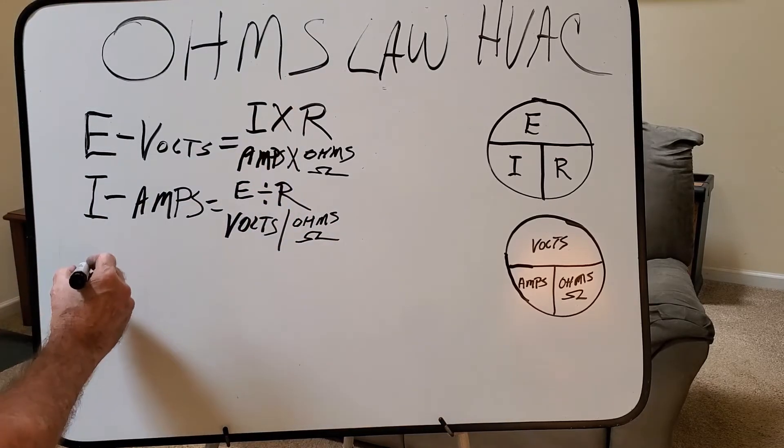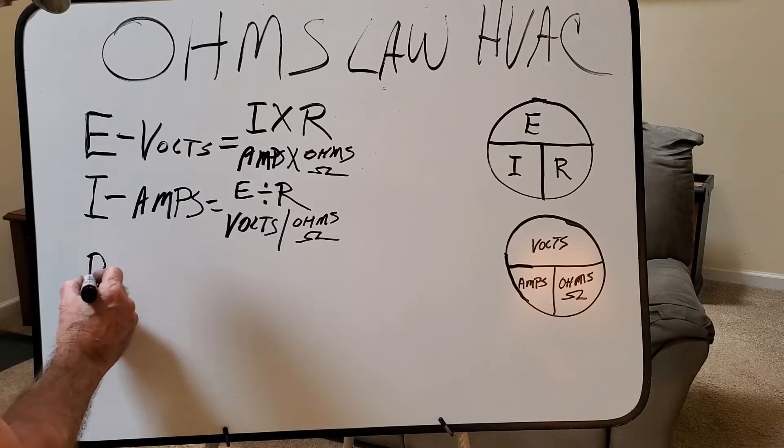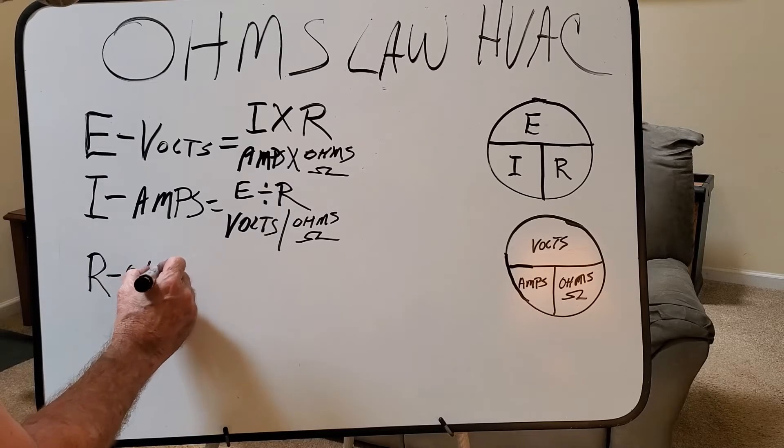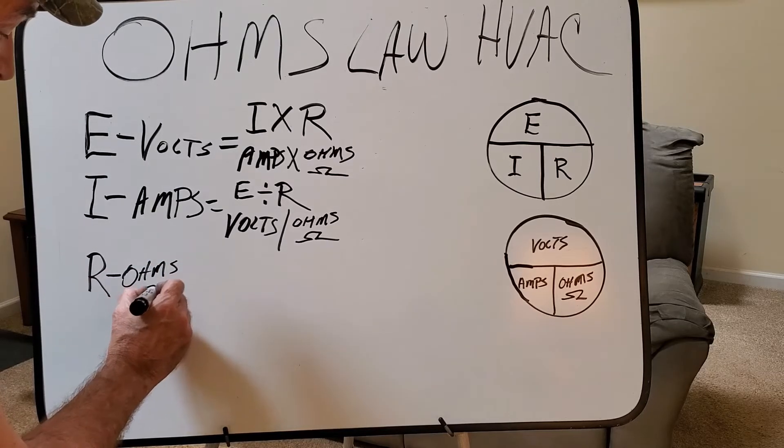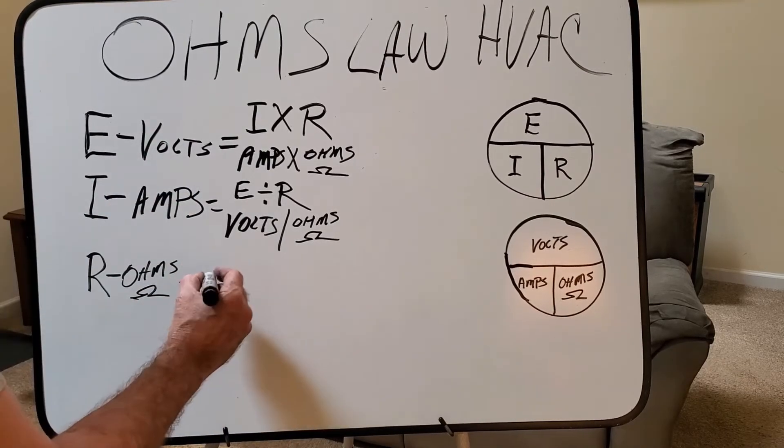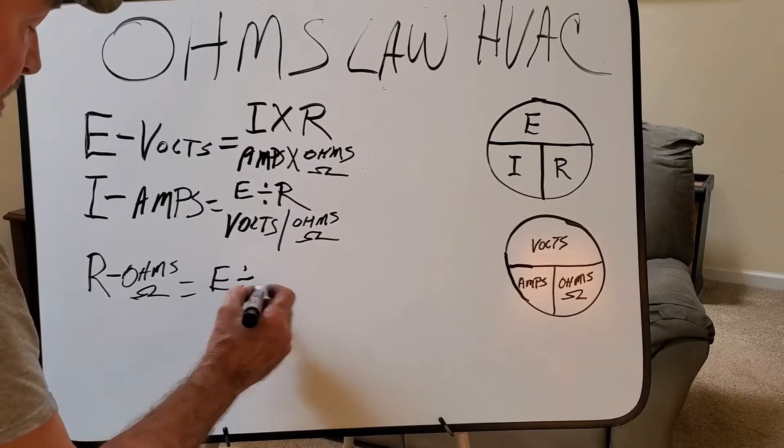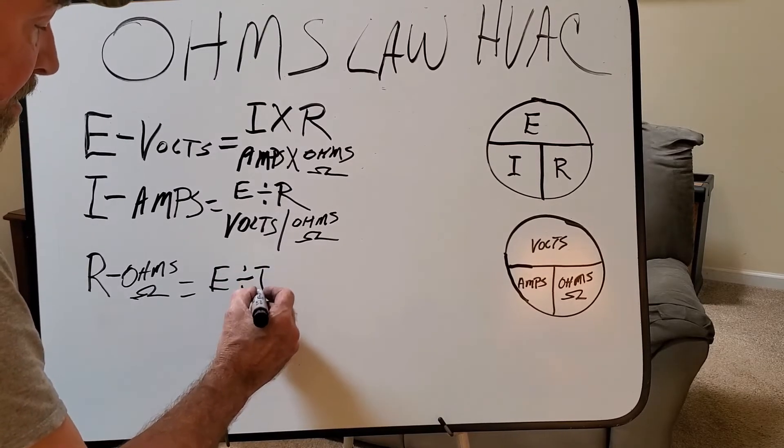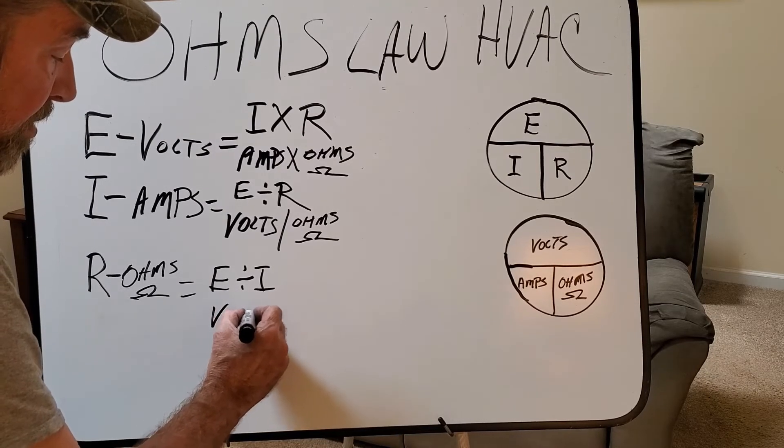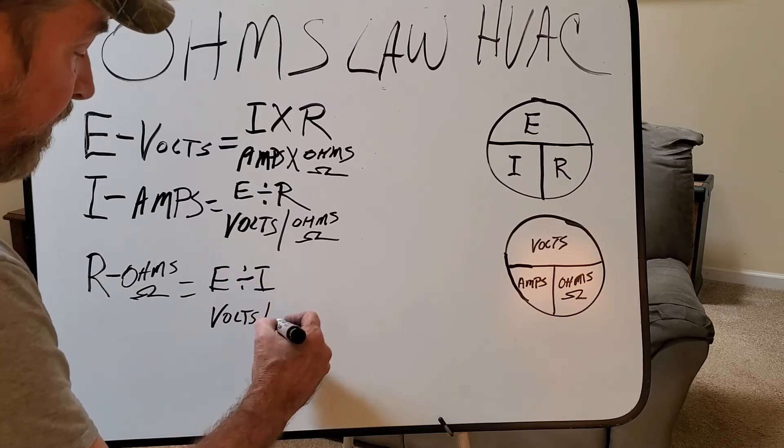Okay, now we're going to come down here to our R, which is ohms. Delta sign going on there. And this is done by E divided by I. Simple, easy. Volts divided by amps.